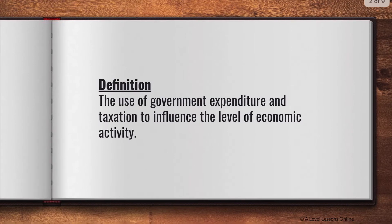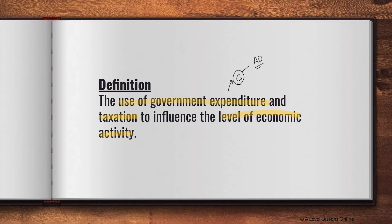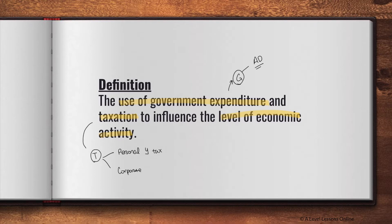The definition of fiscal policy is the use of government expenditure and taxation to influence the level of economic activity. Government expenditure falls under AD as G. Taxation is denoted by T, and different schools may use different notations. Taxation looks at two things: personal income tax and corporate income tax. These two influence C and I, which in turn influence AD.